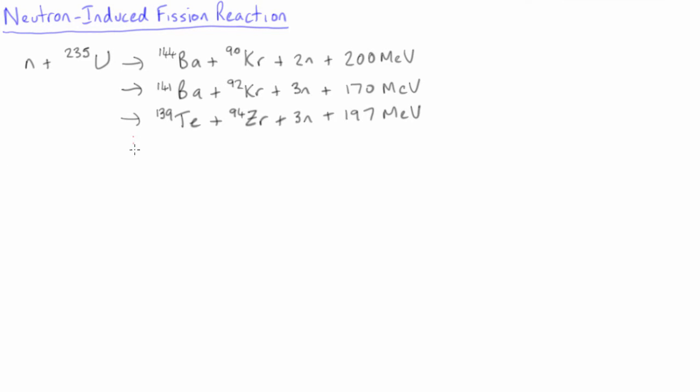If you look at the masses of the various products of a fission reaction, there are hundreds of combinations that are energetically possible. Most of the fission pathways result in a heavier fragment with around 140 nucleons, a lighter fragment with around 95 nucleons, and the emission of 2-3 neutrons and the liberation of around 200 MeV of energy.